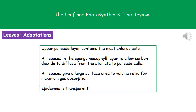In the spongy mesophyll layer there are air spaces, which make it easier for carbon dioxide to diffuse from the stomata to the palisade cells where it's needed for photosynthesis. This works because of the large surface area to volume ratio, meaning we can absorb large amounts of gases in a short space of time. The upper epidermis is transparent so that it allows light to reach the palisade cells.